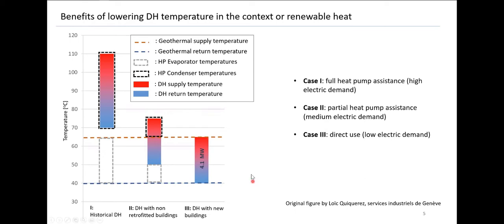The last case, which is the most favorable, is if we have a district heating network that can operate at the level of the geothermal resource. We can make direct use of it. If the return temperature of the district heating network is 40 degrees, we can use directly this 4.1 megawatt without any heat pump assistance — just pumping energy — resulting in much lower electricity consumption. This gives you one idea of the benefits in the context of renewable heat.